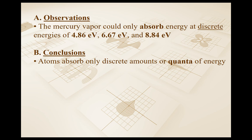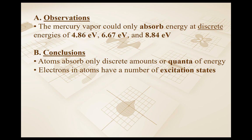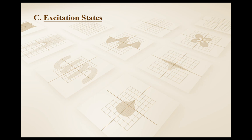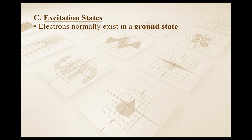What Franck and Hertz concluded is they adjusted the model of the atom to implement something called excitation states. Electrons in an atom normally exist in something called a ground state. A ground state is a really low energy level — it's like a reference energy level, it's where your electrons would prefer to exist. We're going to say at the ground state that our electrons in the mercury vapor have zero electron volts of energy.